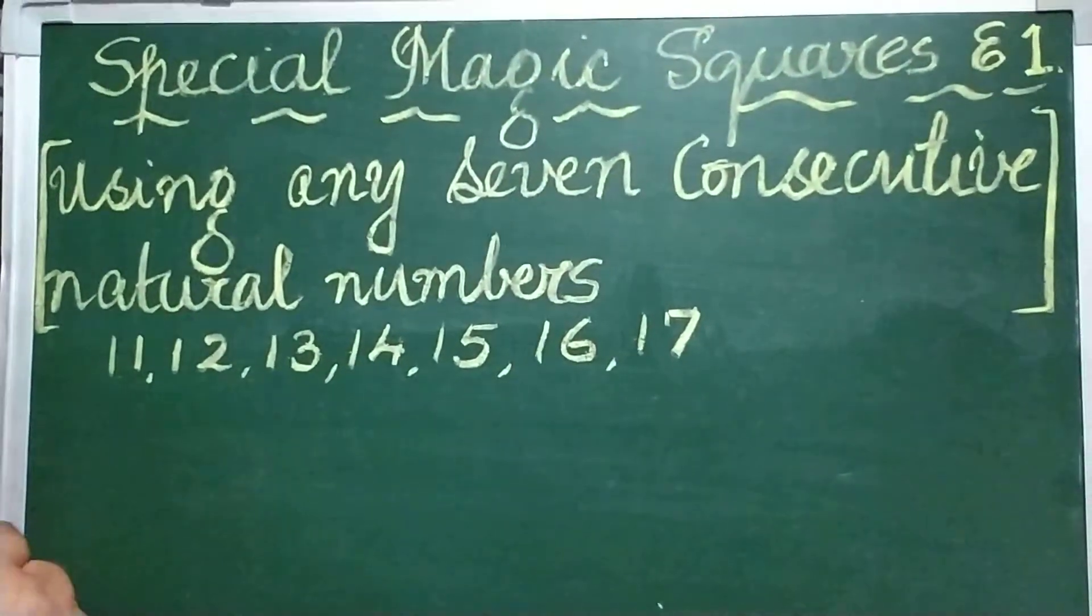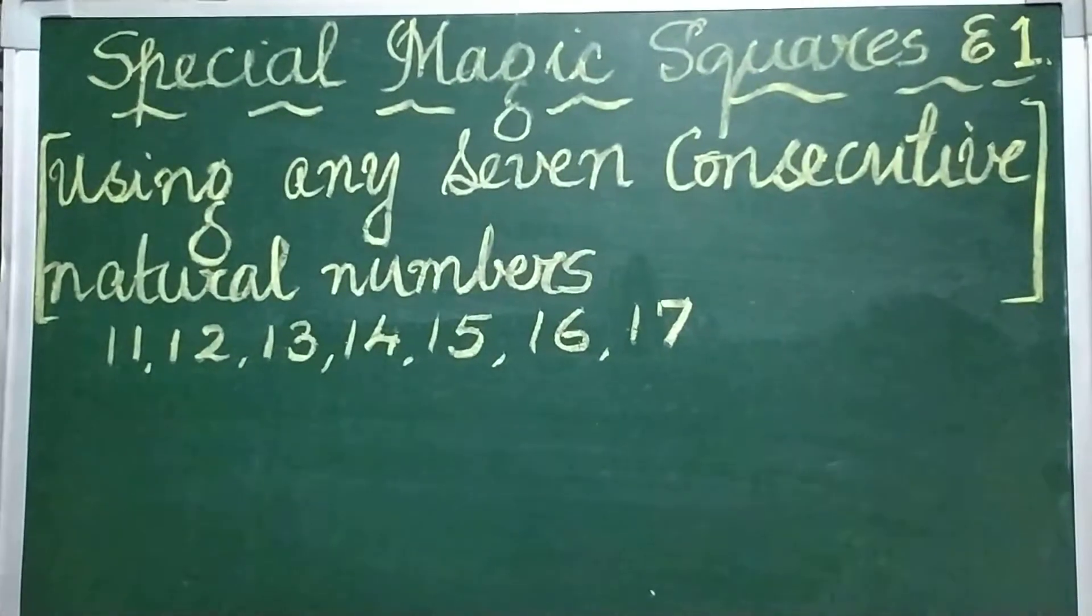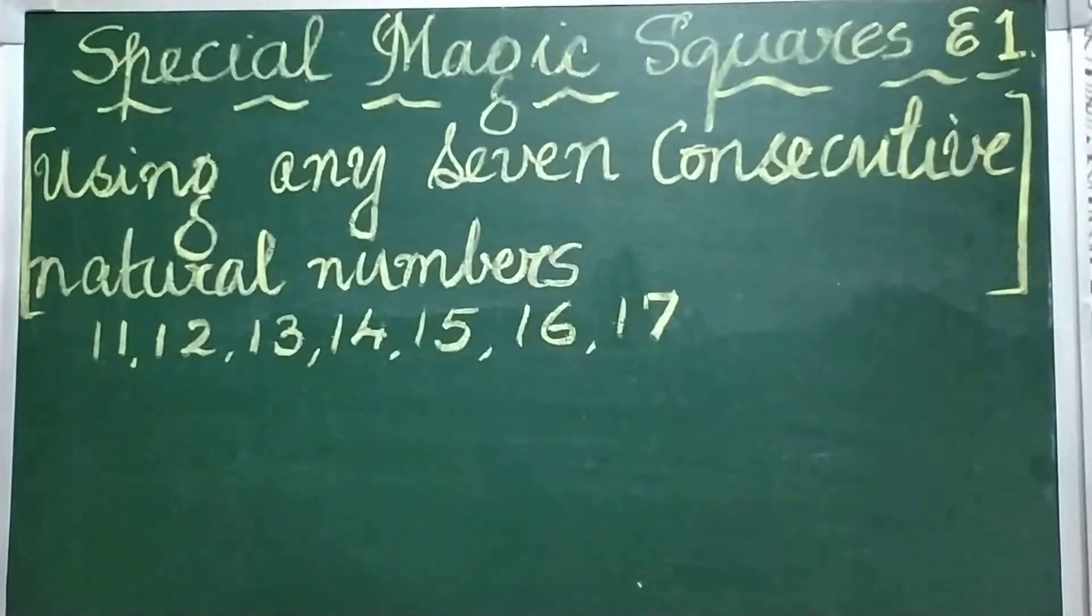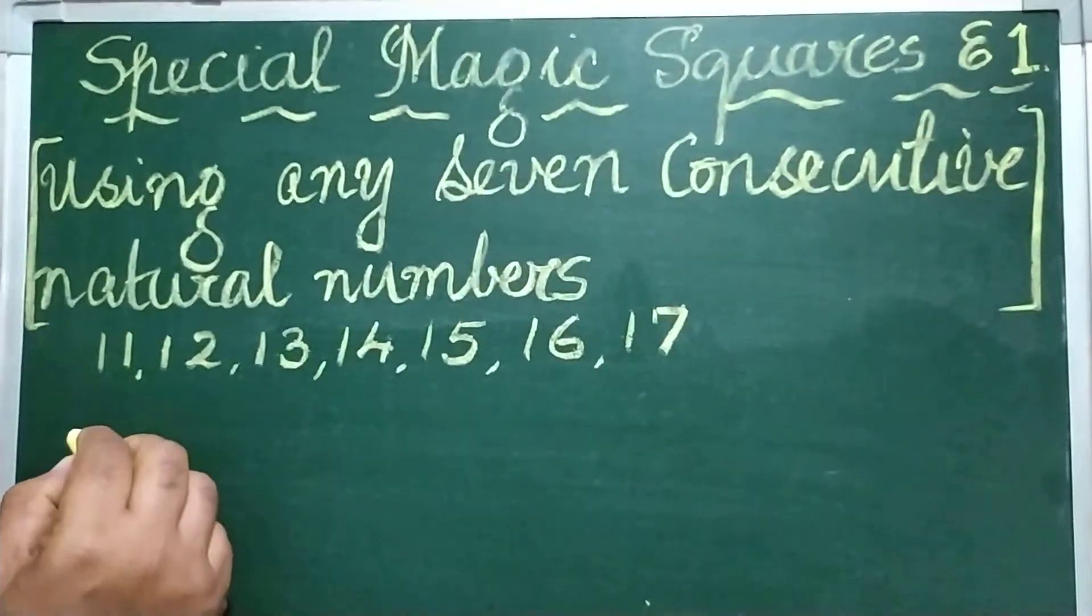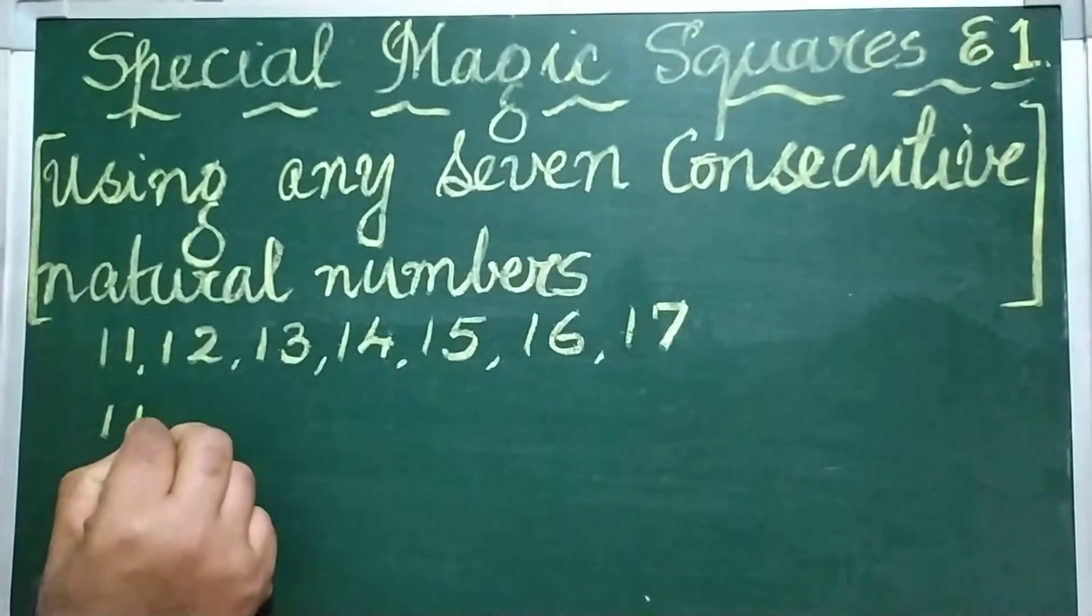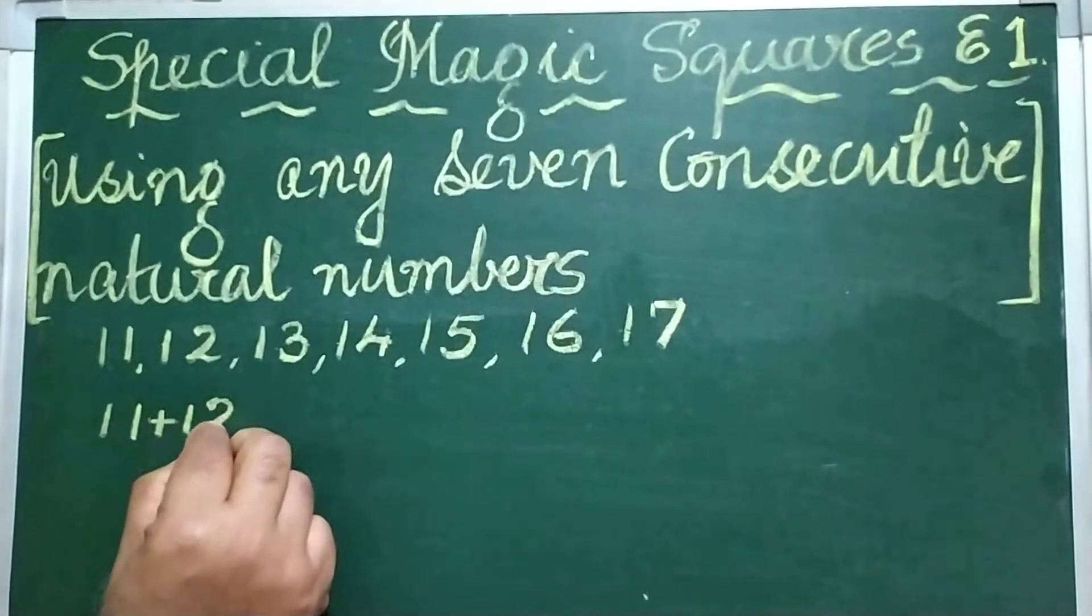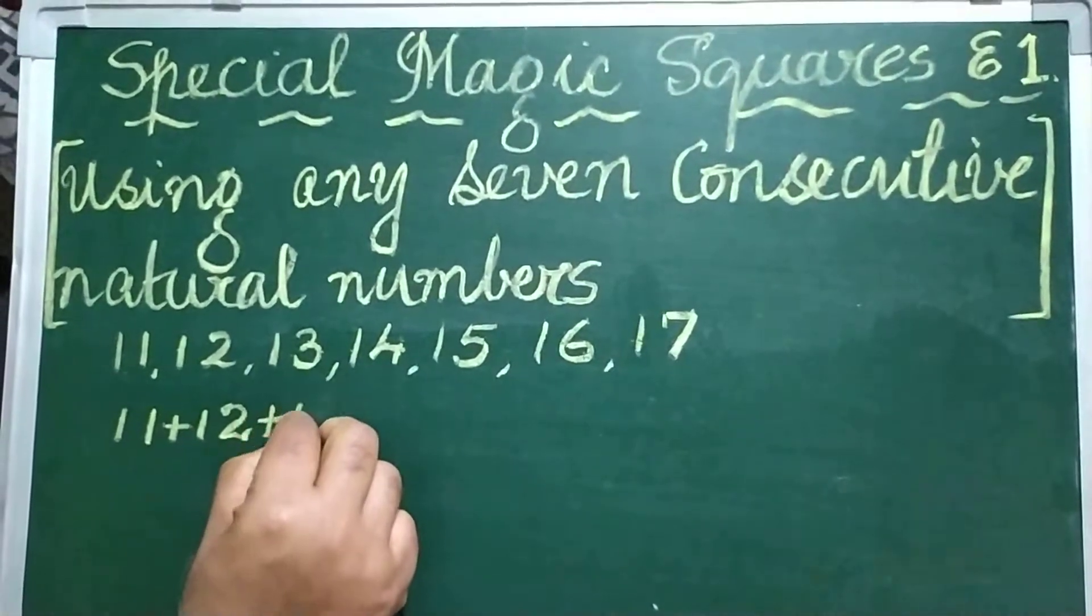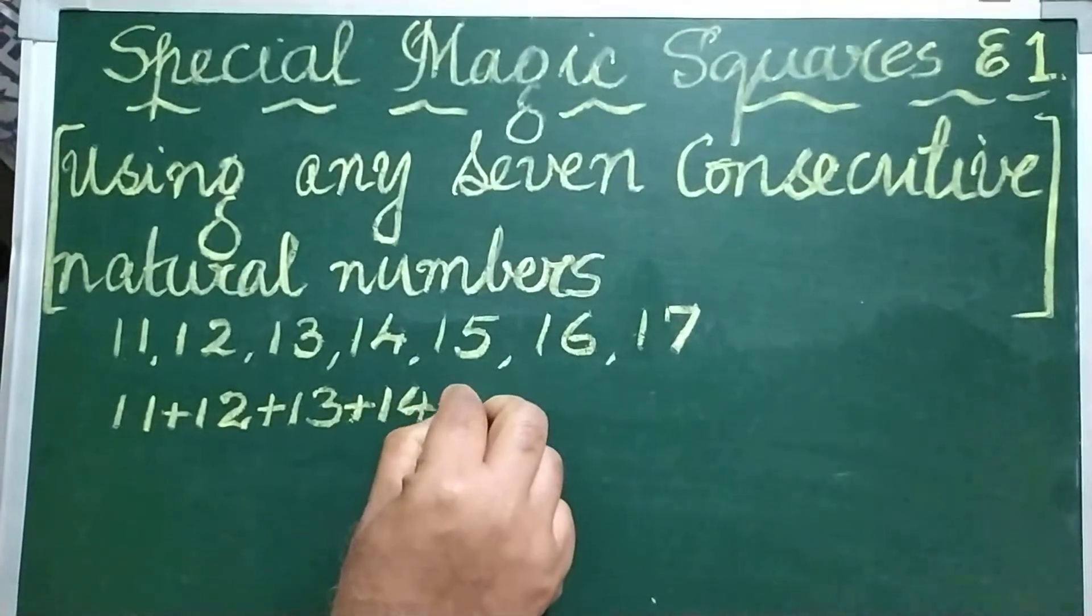So, by using these 7 natural numbers, let us try to construct a 4 by 4 magic square. And what will be the magic sum? The magic sum will be the average of the 7 natural numbers that we have chosen, which needs to be first found out.